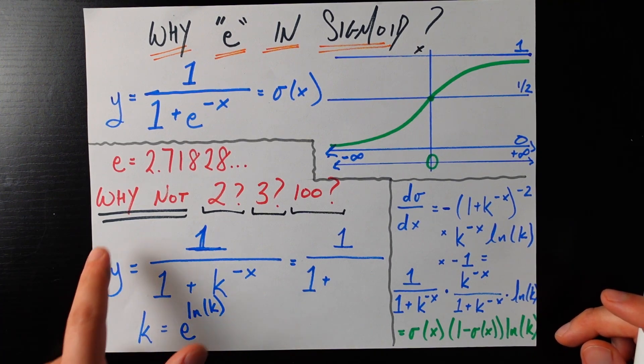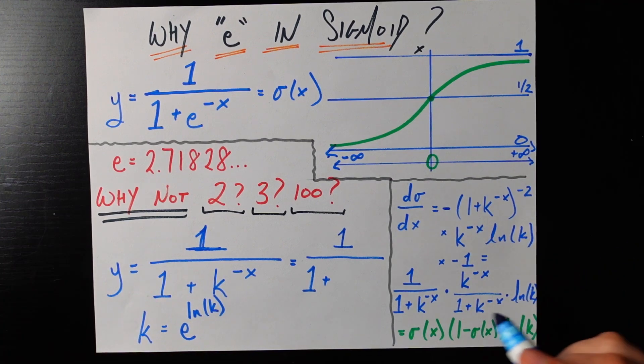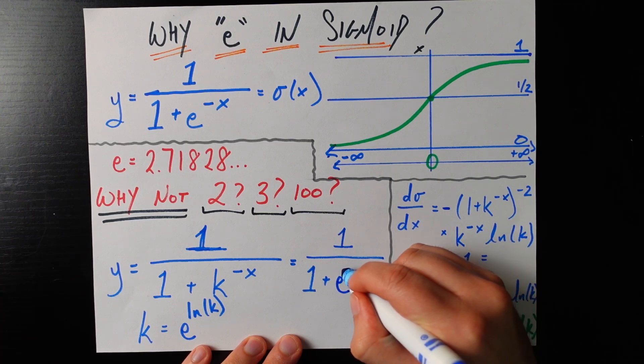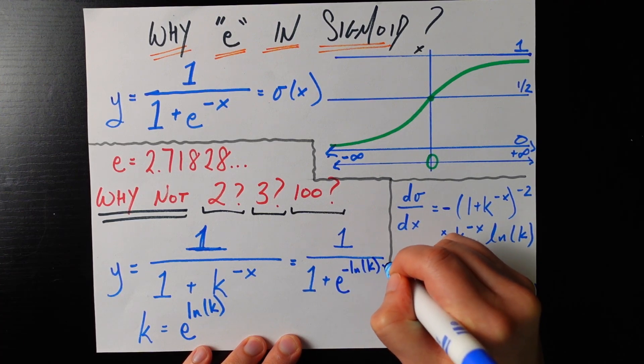And so we can write our new sigmoid as 1 over 1 plus k to the power of negative x which is equal to 1 over 1 plus e to the negative ln k of x.